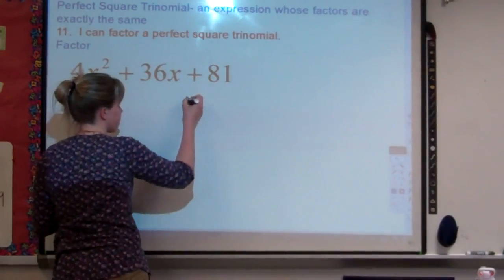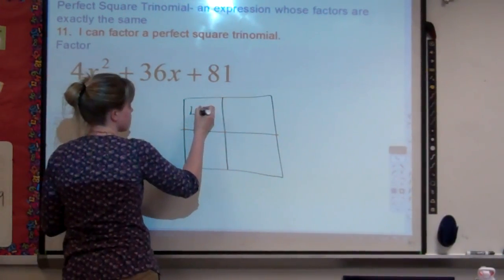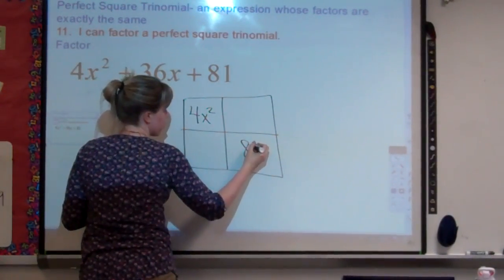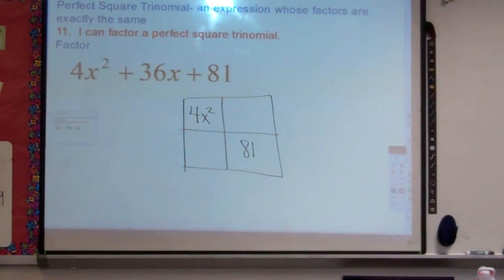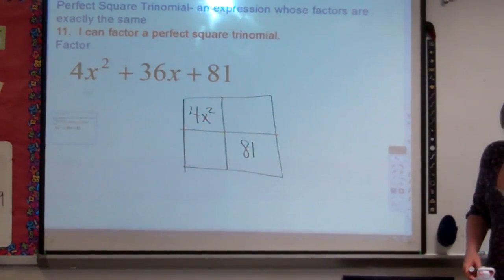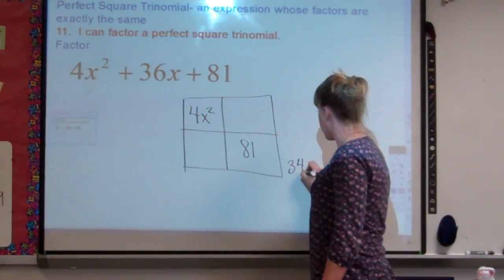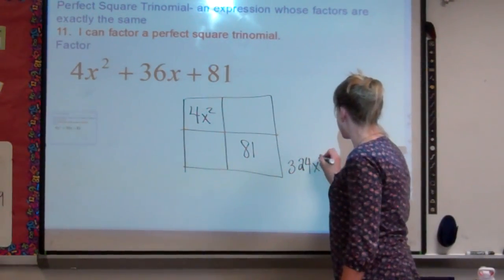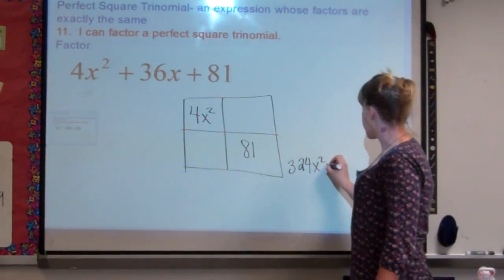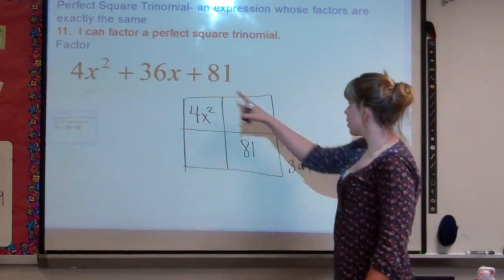I draw my box, I put the first term in the first box, I put the last term in the last box, and then I multiply them. If you're having trouble with any of this arithmetic in your head, feel free to use a calculator. 81 times 4x squared is 324x squared. And we're looking for two numbers that multiply to give me 324x squared, but add to give me the middle term, which is 36.